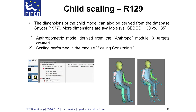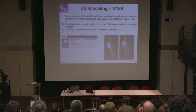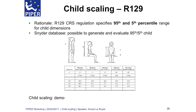There is a second option to scale the child model. You can choose the Snyder database, where there are more dimensions — about 85 dimensions compared to only 34 in J-Bud. First, you can create targets from the anthropometric module, as was already shown, and then scale the child model through the scaling constraints module.